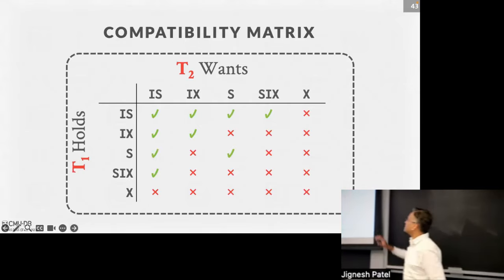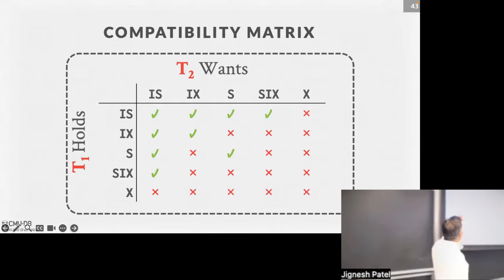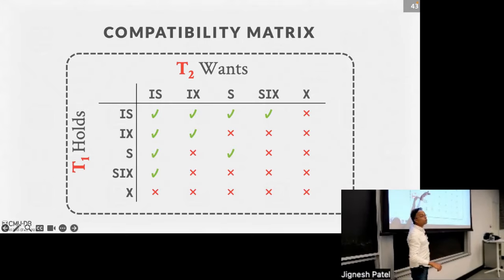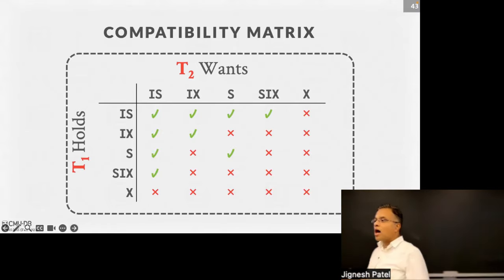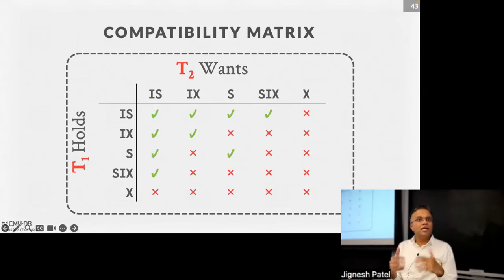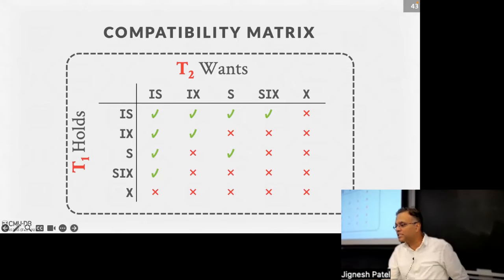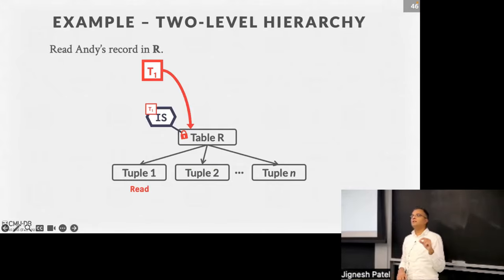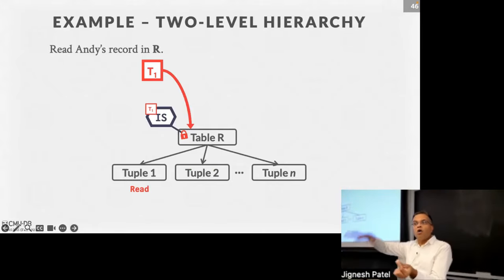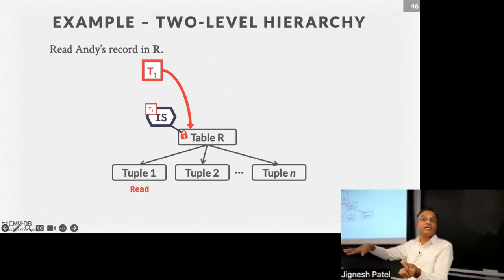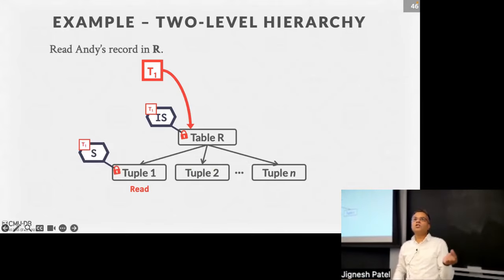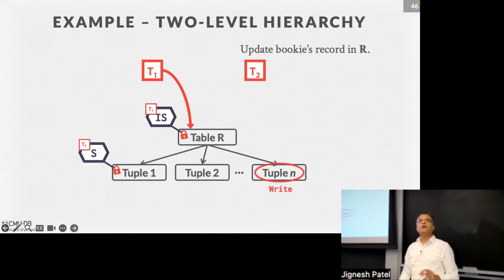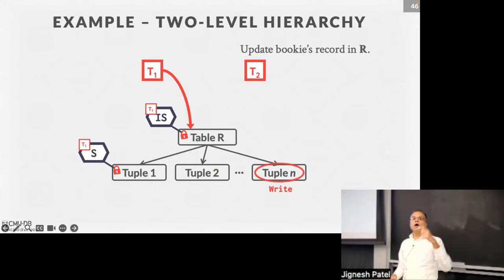We're working with Andy's record example where T1 wants to read Andy's record. You always access records through the hierarchy, which mirrors the storage hierarchy. You'll set an intention-to-share lock on the table — you're not grabbing an S lock on the table because you don't want to block everyone, just an IS lock. In the compatibility table, IS has a lot more green — more things are compatible with it. Then you grab the S lock on the specific record you need to read.